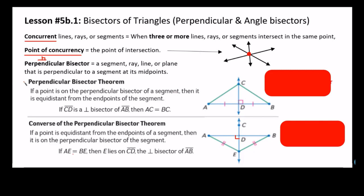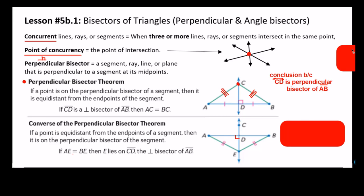Now let's talk about the perpendicular bisector theorem. Basically, what this theorem says: if you have any point on the perpendicular bisector of a segment, that point is equidistant to the endpoints of the segment. So in other words, these two distances are congruent. So if you have a perpendicular bisector, any point on that perpendicular bisector is equidistant. In this drawing, I was able to draw these two things because I know that this is the perpendicular bisector of AB.